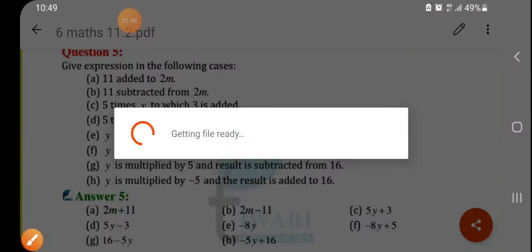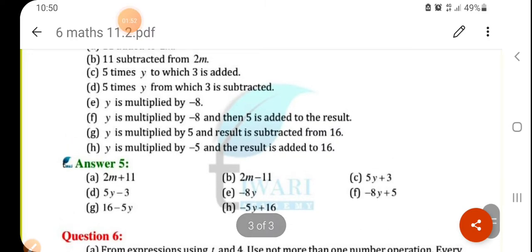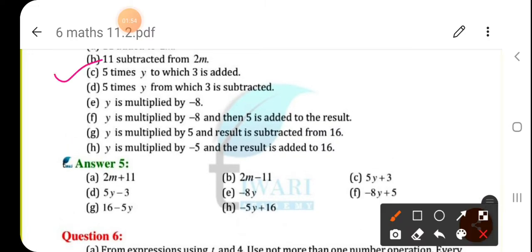Then 5 times y to which 3 is added. So 5 into y, 5 times y, it means 5 into y. To which means to 5y, 3 is added. So 5y plus 3.